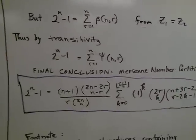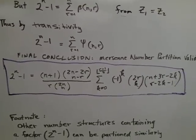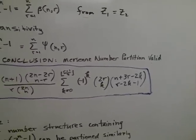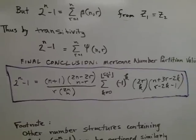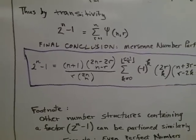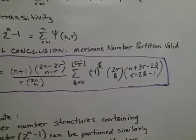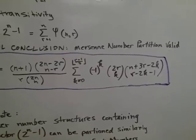The final conclusion, then, is that the Mersenne number partition is valid for all n, or all symbolic n, and that it has this structure: 2^n - 1 is equal to the simplified combinatorial expression that has only one internal summatory function.